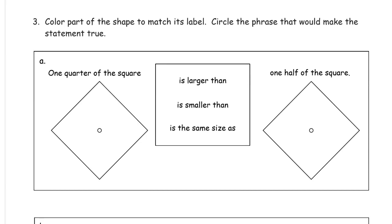Color part of the shape to match its label, and circle the phrase that would make the statement true. So this says one quarter of the square, so I'm going to color one quarter of the square.